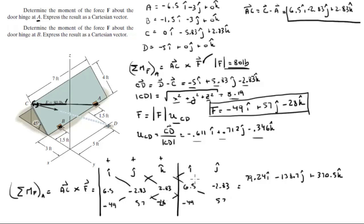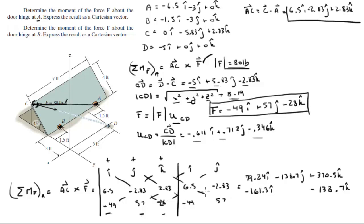For the negative diagonals: negative 49 times negative 2.83 times k — still negative because we have three negatives — gives negative 138.7k. Negative 57 times 2.83 times i gives negative 161.3i. And negative 28 times 6.5 times j gives positive 182j.